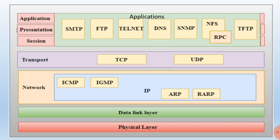In the TCP IP protocol, the layers from bottom are: physical layer, data link layer, network layer, transport layer, and the last three — session, presentation, application layer — are combined. In the network layer we have protocols like ICMP, IGMP, IP, ARP and RARP. In the transport layer we have two protocols: TCP and UDP. The application, presentation, and session layers consist of SMTP, FTP, Telnet, DNS, SNMP, NFS, RPC and TFTP protocols.